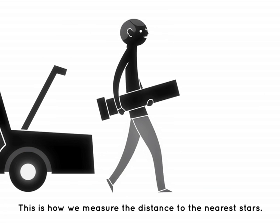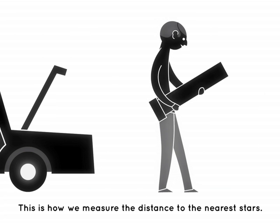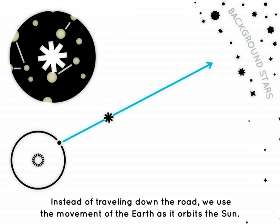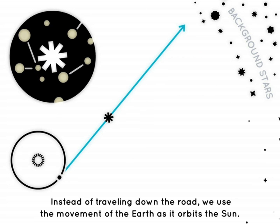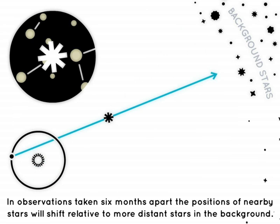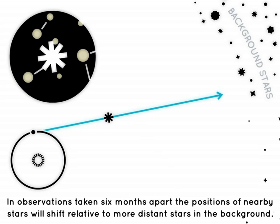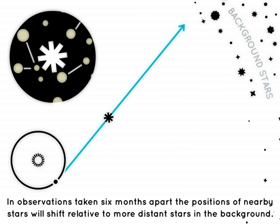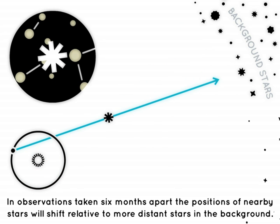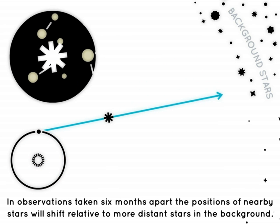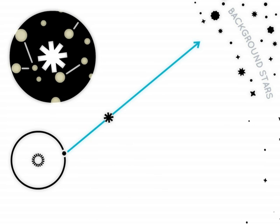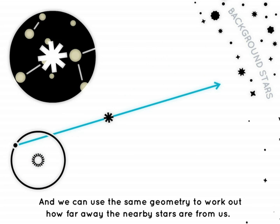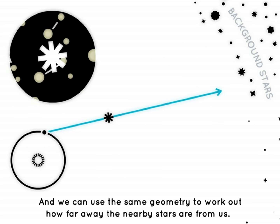This is how we measure the distance to the nearest stars. Instead of travelling down the road, we use the movement of the Earth as it orbits the Sun. In observations taken six months apart, the positions of nearby stars will shift relative to more distant stars in the background, and we can use the same geometry to work out how far away the nearby stars are from us.